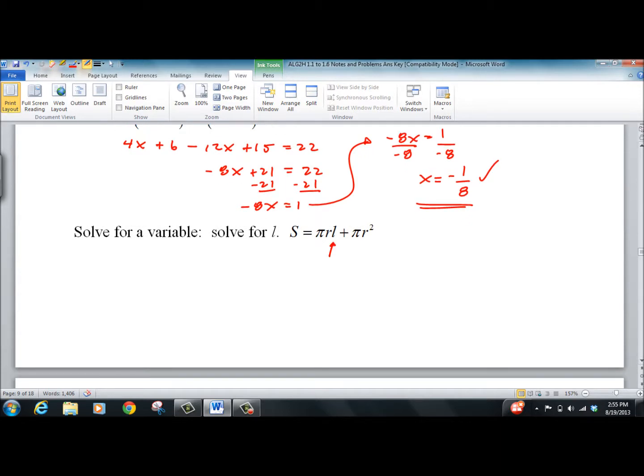The other thing we can do when solving an equation is solve for a variable. So there's our L right there. This is the surface area for a cylinder, I believe. So write the equation first. And get the L alone. Divide everything left.